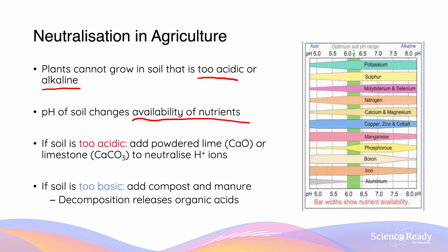If the soil is too acidic, we'll add some powdered lime, CaO, or limestone, CaCO3, which are both basic compounds and they will neutralize the H+ ions which are in the soil.